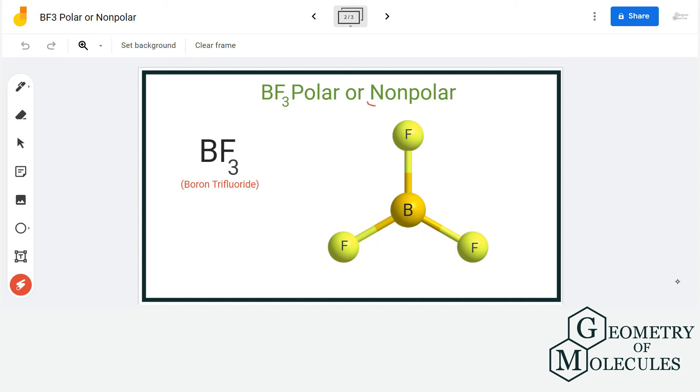And hence it is a non-polar molecule because it doesn't have any poles in the molecule as such. There are no positive poles or negative poles in this molecule. So as there are no poles, the molecule becomes non-polar. So BF3 is a non-polar molecule.